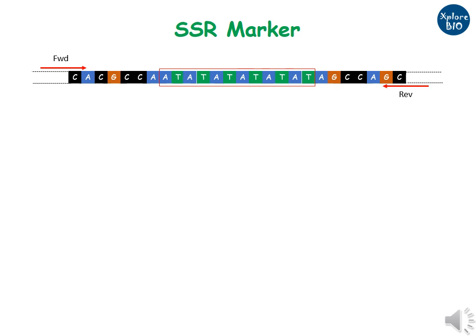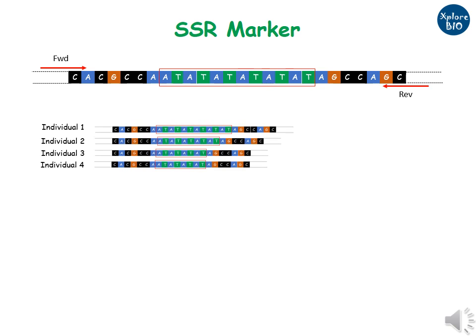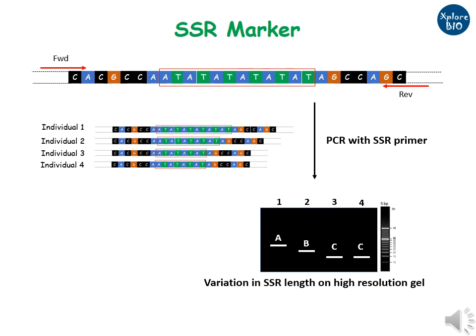In this example, an SSR marker is designed for 80 repeats. When this primer is used to amplify DNA of different individuals using PCR, similarities and differences between them are determined based on their length on an agarose gel. In this agarose gel, individuals 3 and 4 have the same length fragments, hence they are more similar at the DNA level than individuals 1 and 2, who differ by a 5 base pair reference.